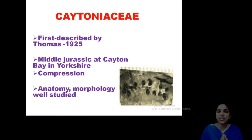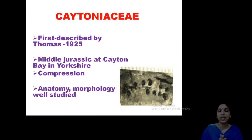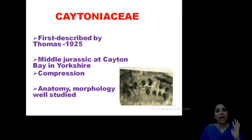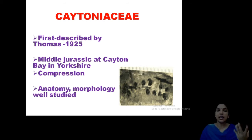This fossil was first described by Thomas in 1925 and is observed in the Middle Jurassic period. It is also observed from the bay in Yorkshire. Usually this fossil Chitonia is found as a compressed type, and a very detailed account of anatomy and morphology was well studied. The reproductive part is also very important — they are having some phylogenetic importance. This family is sometimes considered as one of the ancestors while discussing the evolution of angiosperms, and this family has its own phylogenetic importance.